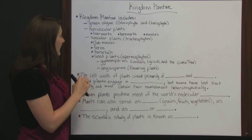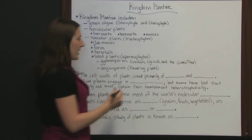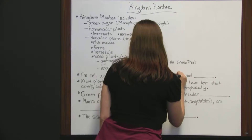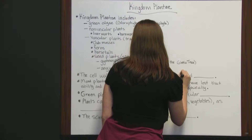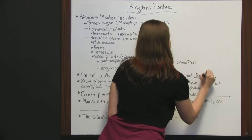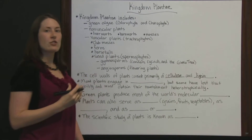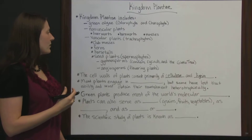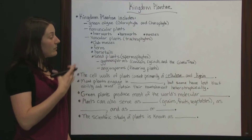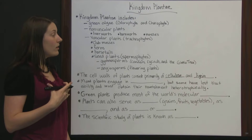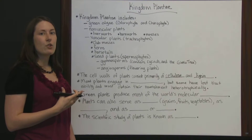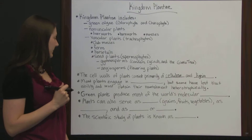The cell walls of plants consist primarily of cellulose and lignin. Lignin gives structure and strength to a plant cell wall, especially in trees, and it plays a large role in conducting water through the plant.